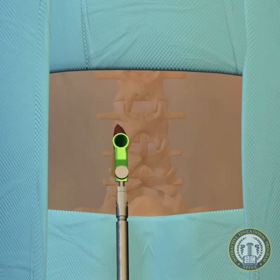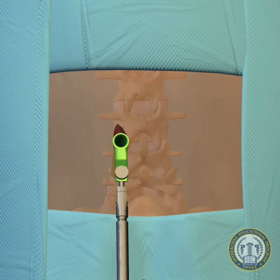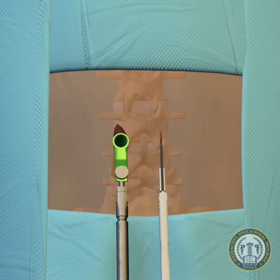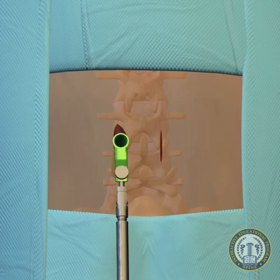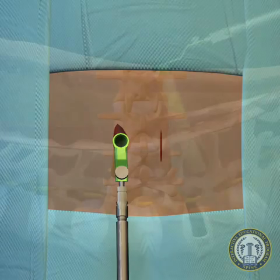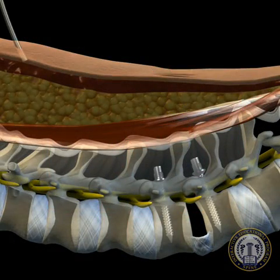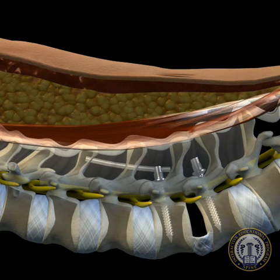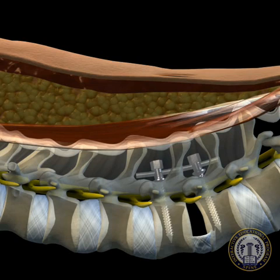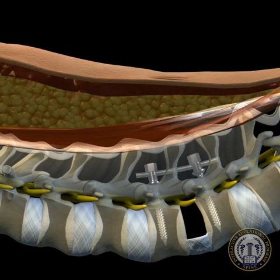Following the discectomy, the interspace may now be distracted by creating a mirror 2.5 centimeter skin incision on the contralateral side, centered over the interspace. Percutaneous pedicle screws are then placed, and a rod is sub-fascially levered into place. The contralateral screws are tightened to a distracted position in order to create optimal space for the interbody device.